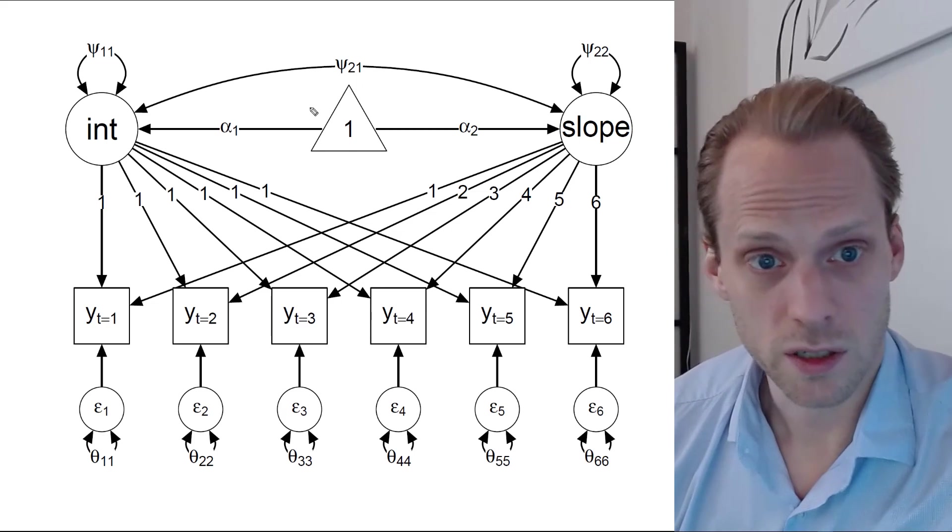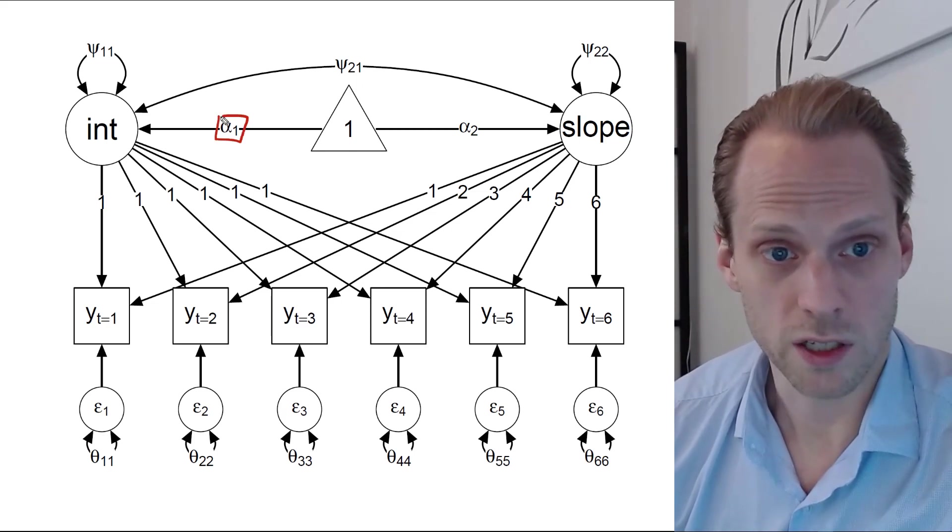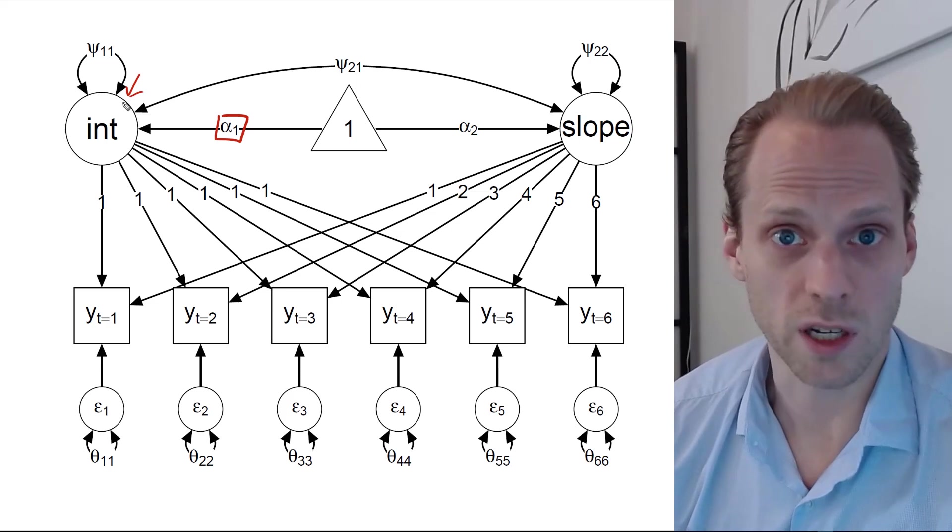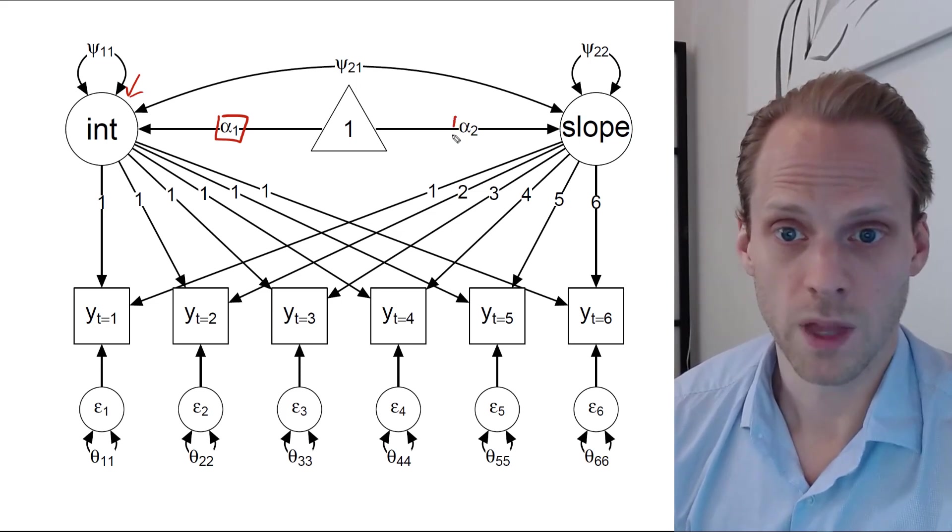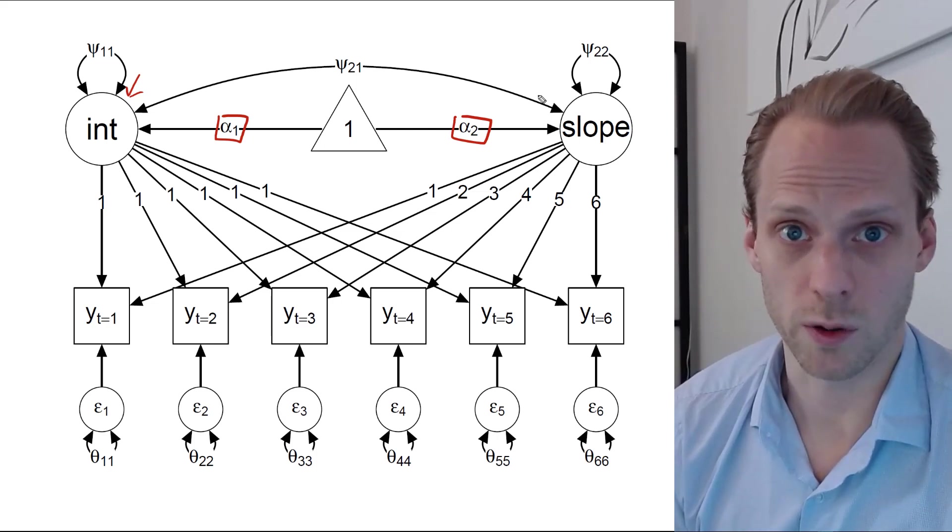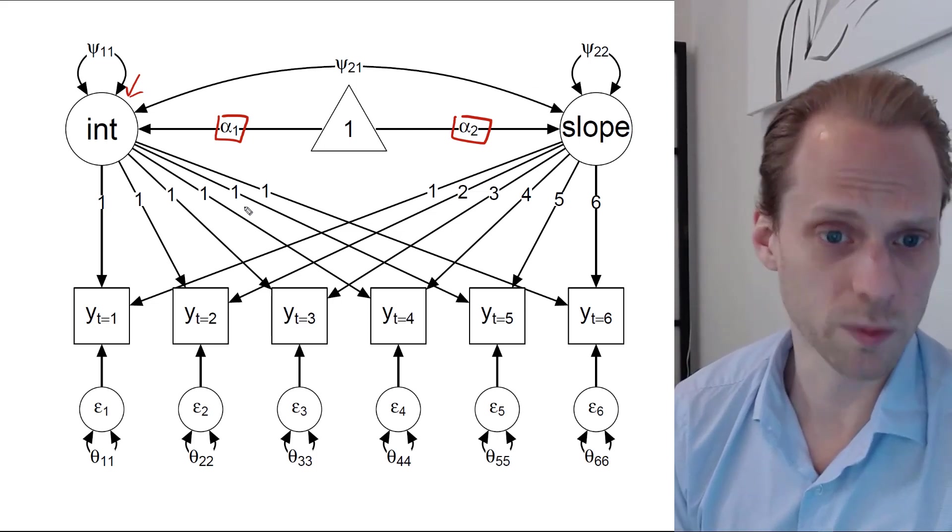Then for the mean structure, we now set a mean for the intercept. So this is the average intercept for the average person. And we set a mean for the slope. So this is the average growth.